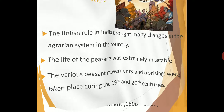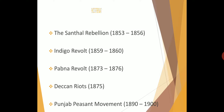In this class, we are going to discuss the following revolts: the Santal Rebellion (1853 to 1856), the Indigo Revolt (1859 to 1860), the Babna Revolt (1873 to 1876), the Deccan Ryots revolt (1875), and the Punjab Peasant Movement (1890 to 1900).